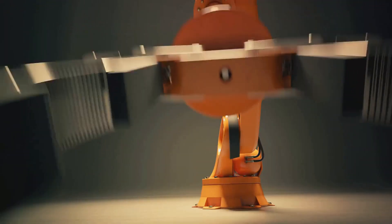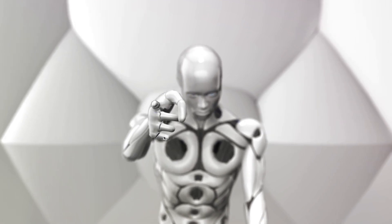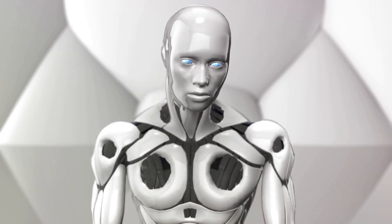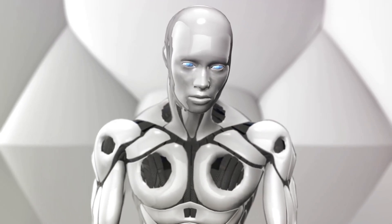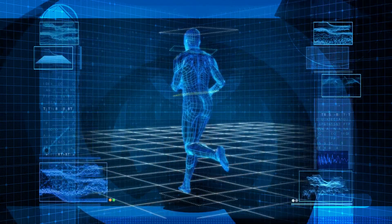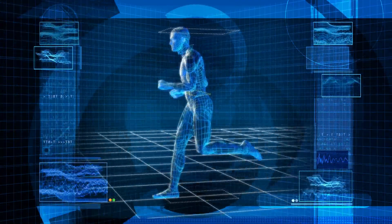Then enters the game changer, artificial intelligence. AI, in essence, is the simulation of human intelligence by machines. Suddenly, robots were not just machines anymore. They could learn from their experiences, adapt to new situations and make decisions. This was the dawn of a new era, the era of smart robots.